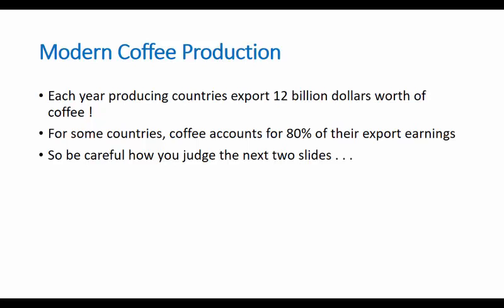Modern coffee production: coffee-producing countries do $12 billion worth of coffee exports per year. For many poor countries, coffee can represent over half of their export income — it's the lifeblood of the country. To give you an idea of the scale: the largest single traded product in the world is oil; the second largest is coffee. So there are big stakes, and for some countries this is everything.